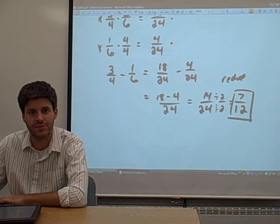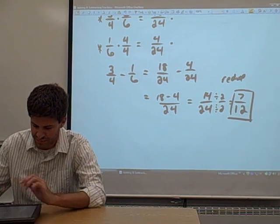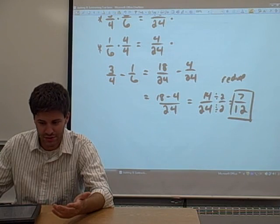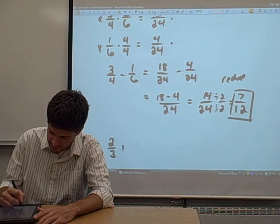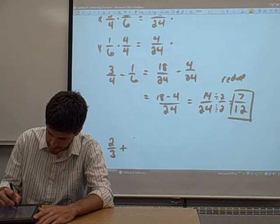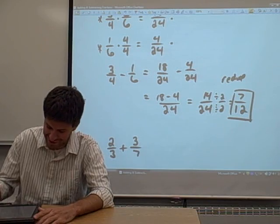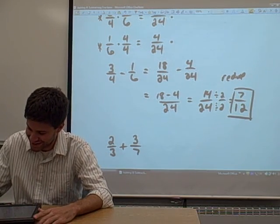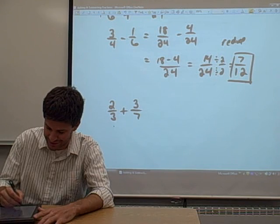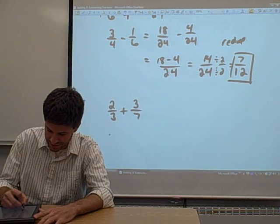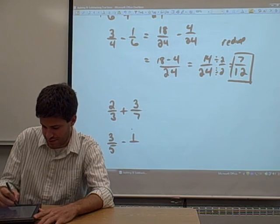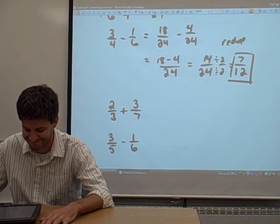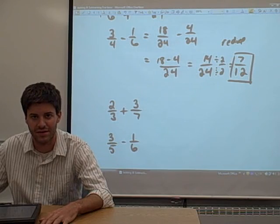So that was a few examples. Why don't you give one a try on your own? Why don't you try to add, oh I don't know, 2 thirds plus 3 sevenths. Try to do that one. And also while you're at it, why don't you try to do 3 fifths minus 1 sixth. Give those a shot, and come back.